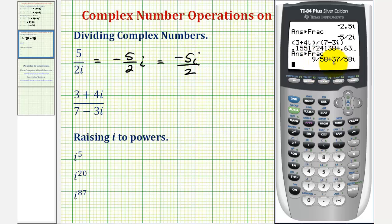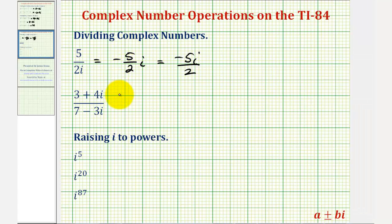So we have nine fifty-eighths plus thirty-seven fifty-eighths i. Again, this i here is not in the denominator. Notice how the calculator is giving us the complex number in standard form, with a form a plus or minus b i. But a lot of times when doing this by hand, we write this as a single fraction. This is equivalent to nine plus thirty-seven i all over fifty-eight. Again, it's important to recognize that the i here is not in the denominator.